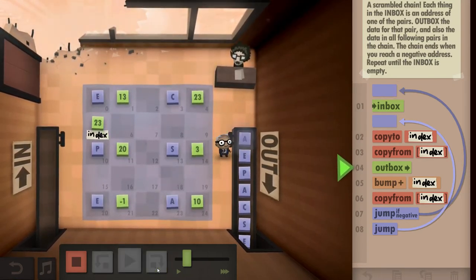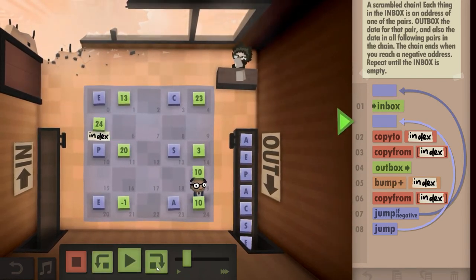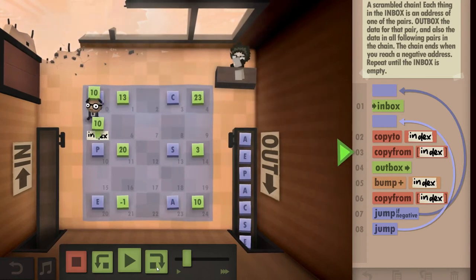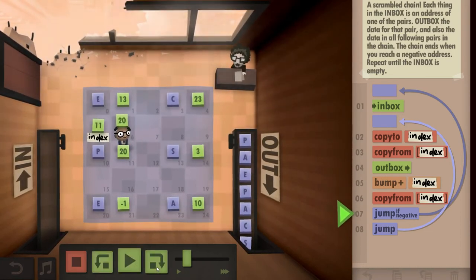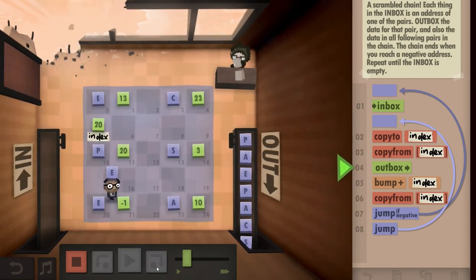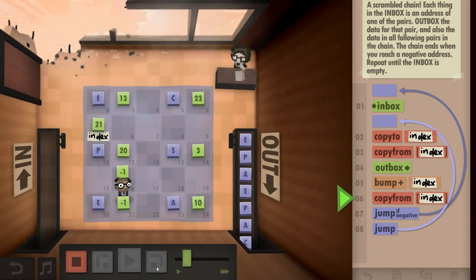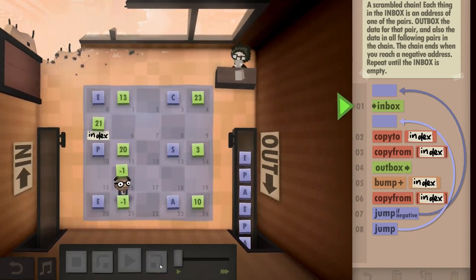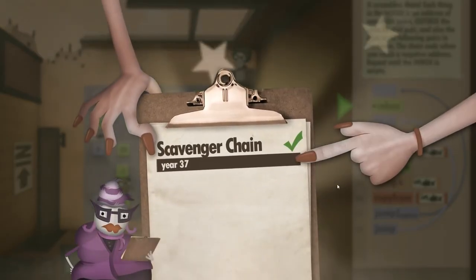And now we have the A, bump up our index, get the 10, get the P, go to 11, which leads us to 20. And so we got the escape ape. Hit the minus one, and that's our decoded word, scavenger chain.